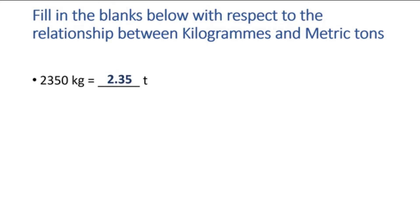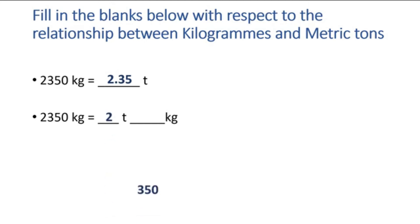Let's go to the next example. The same value — 2350 kilograms — we are going to write in tons and kilograms. In 2350 kilograms, you know there are 2000 kilograms, which means there are 2 tons. The remaining part — 350 — we write in the kilogram section.